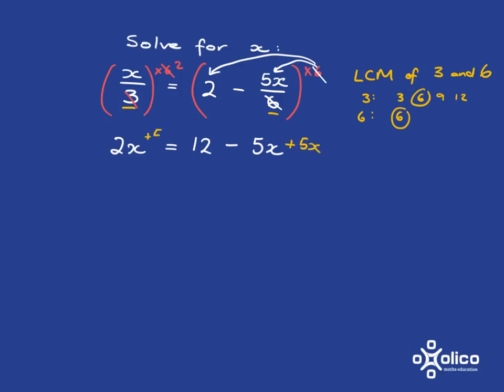and we will get 7x is equal to 12, and then to get x by itself, we divide both sides by 7, and we're done.